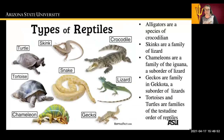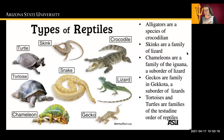There are various types of reptiles. We'll look at turtles and tortoises, lizards like chameleons, snakes, geckos, skinks, and crocodiles. Alligators are a species of the crocodilian family. Skinks are a family of lizard. Chameleons are a family of the iguana, which is a suborder of the lizard. Geckos are a family of Gekota, a suborder of the lizard. Tortoises and turtles are both in the family Testudine, which is an order of the reptiles.